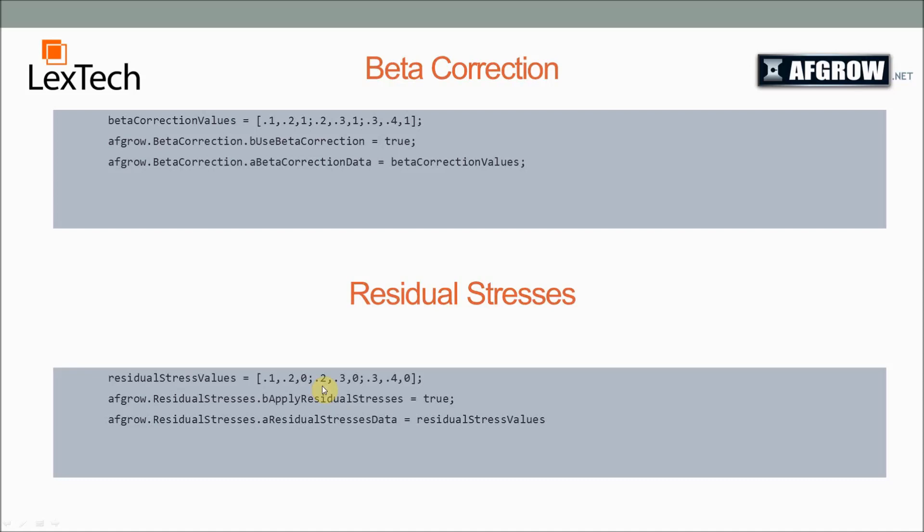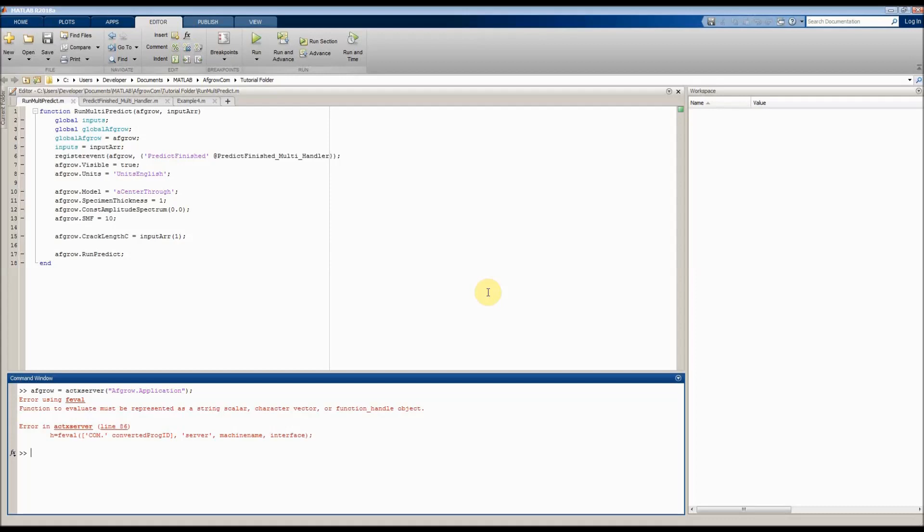Next, I will show you how to create one of these example solutions in MATLAB. Now I will demonstrate how to run the runMultiplePrediction function we wrote earlier, and also how to create our own function. First of all, we need to create an AFGRO server, a COM server. We do that by saying AFGRO equals ACTXSERVER. And then in the parentheses, we do single quote AFGRO.Application.